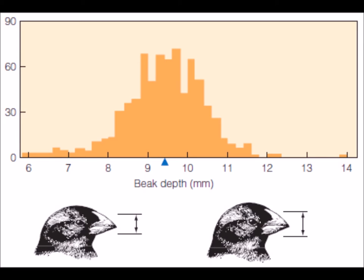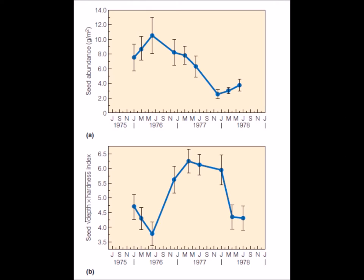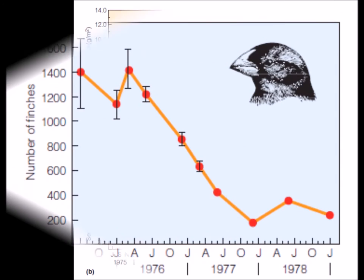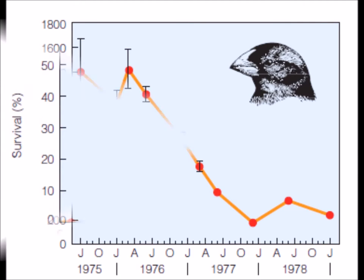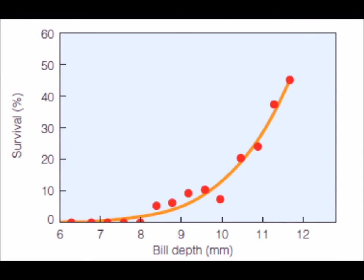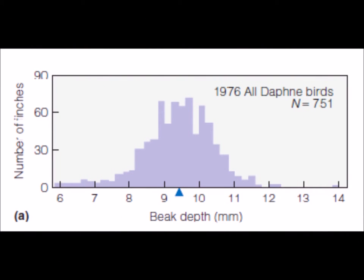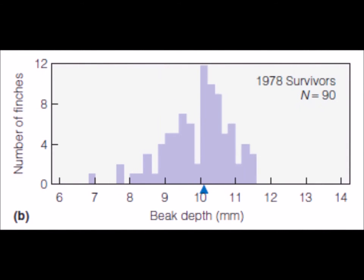The beaks of the finches vary from 8mm to somewhere between 11–12mm. However, severe drought caused by climate change affected the thickness, hardness, and abundance of seeds across the island. The seed abundance declined and the seed hardness index increased from 1975 to 1978. Proportional to the decline in seed abundance was the decrease in the number of finches across the island. A large number of finches with beak sizes of 10–11mm survived the scarcity of food. The increased survival rate of individuals with larger beaks resulted in a shift in the distribution of beak sizes in the population.